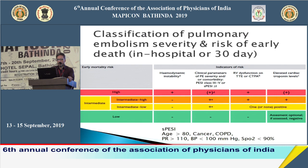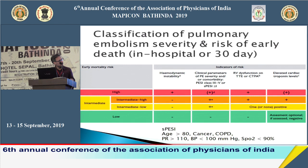The simplified Pulmonary Embolism Severity Index (sPESI) consists of six parameters: age more than 80, cancer, COPD, pulse rate more than 110, BP below 100, and saturation below 90. If any one of these six is present, it indicates high risk. A hemodynamically unstable patient with sPESI score greater than one, RV dysfunction on echo, and elevated biomarkers is classified as high risk.